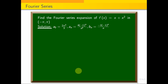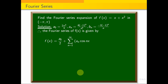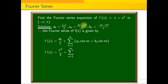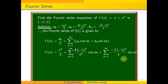So a naught, a_n, and b_n are found. Therefore the Fourier series of f of x is given by f of x equal to a naught by 2 plus summation n equal to 1 to infinity a_n cos nx plus b_n sin nx. Substituting: pi square by 3 plus summation n equal to 1 to infinity 4 times minus 1 power n by n square into cos nx, plus summation n equal to 1 to infinity minus 2 times minus 1 power n by n into sin nx. This is the Fourier series expansion. Subscribe to the channel for more. Thank you for watching.